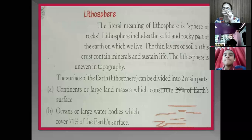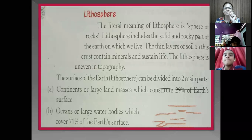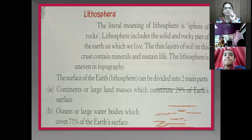Lithosphere is the topmost layer on the surface of the earth, which is made up of rocks and soil. Lithosphere includes the solid and rocky parts of the earth. The thin layer of soil on the crust contains minerals and sustains life. The lithosphere is uneven in topography — topography means surface, referring to the land area.